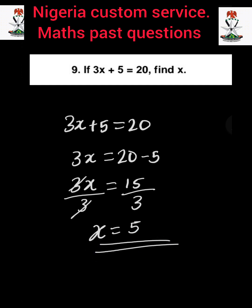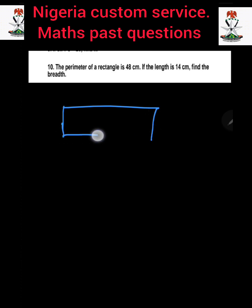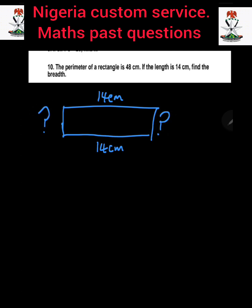Therefore, the value of x is 5. Question number 10: The perimeter of a rectangle is 48 cm. If the length is 14 cm, find the breadth. We first sketch a rectangle. The length is the long side, so both long sides are 14 cm. We need to find the breadth. The formula for the perimeter of a rectangle is: perimeter equals 2 multiplied by length plus breadth.